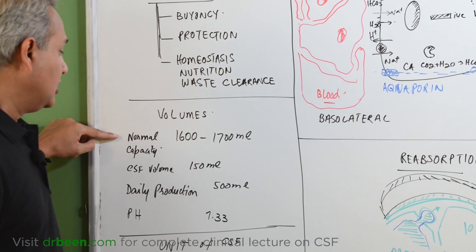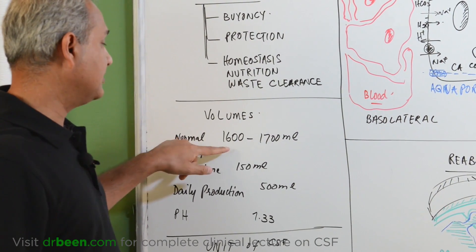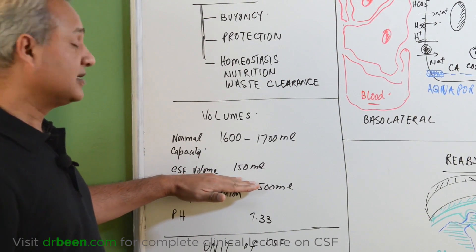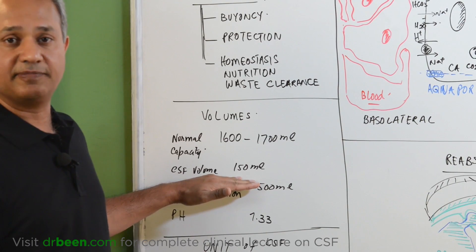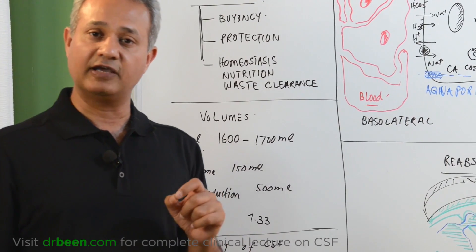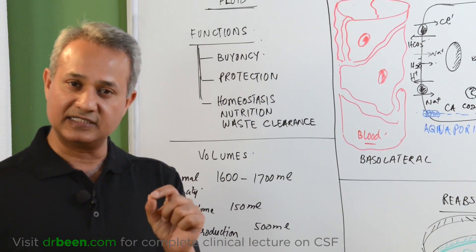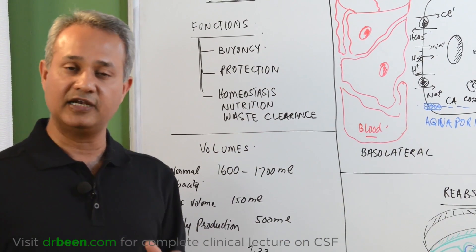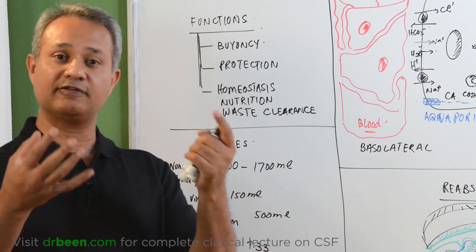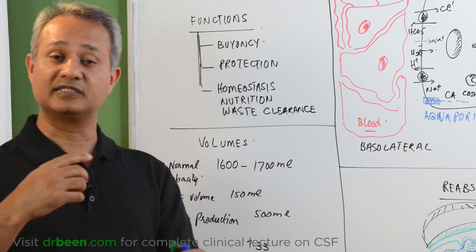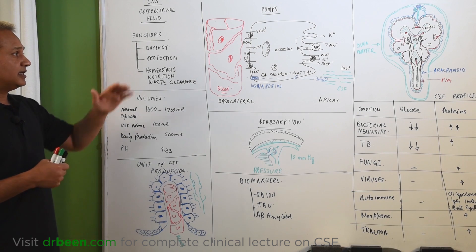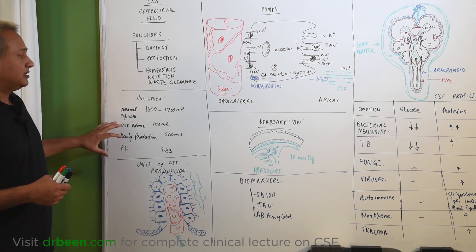Now, volumes. Normal capacity for the nervous system cavities is about 1600 to 1700 milliliter. Out of that, 150 milliliter is the CSF capacity or the volume present at one time. Now, CSF total production, daily production is about 500 milliliter. So, 150 milliliter CSF present at one time, 500 milliliter produced every day, that means about three times in a day, CSF is replenished. CSF is cycled three times a day. The pH of the CSF is 7.33. So, that is the functions and the volumes.